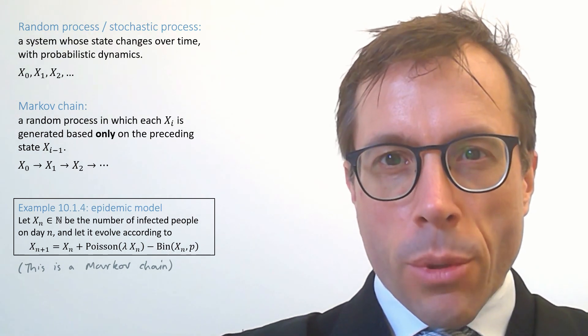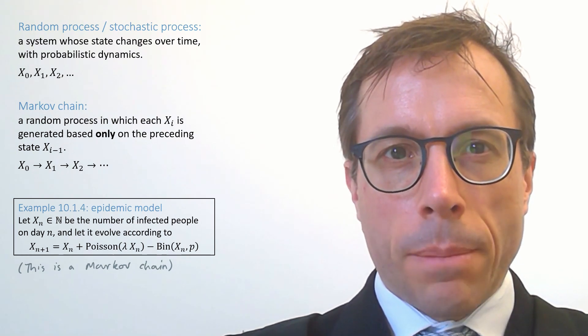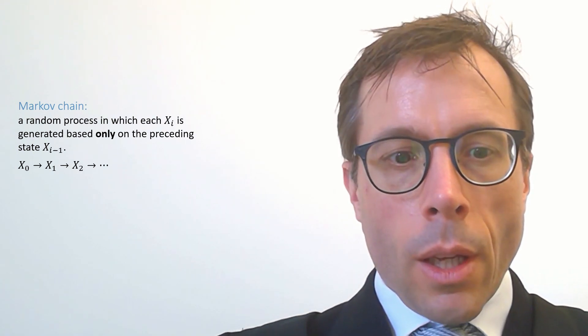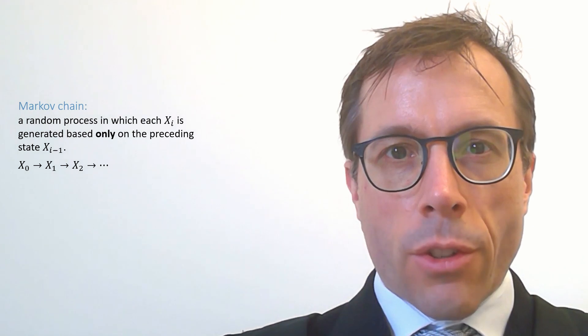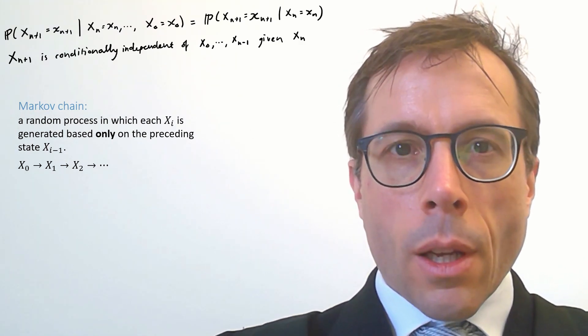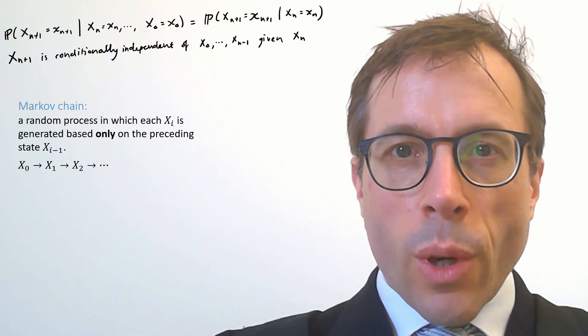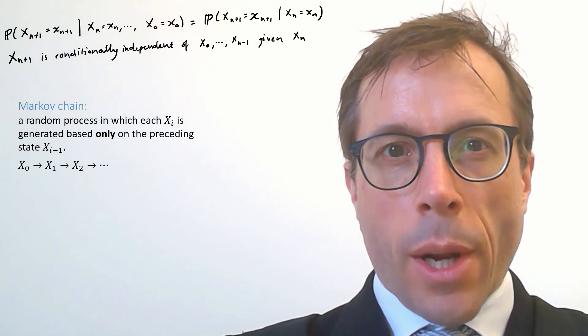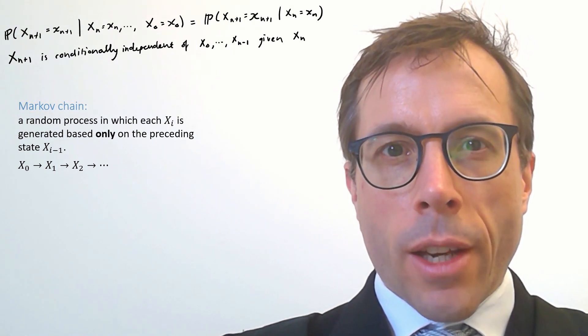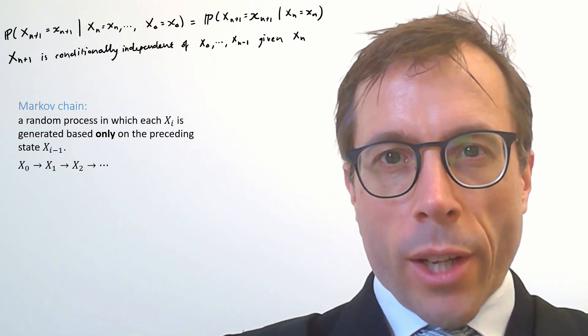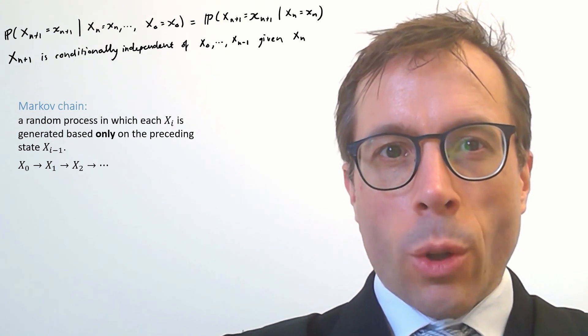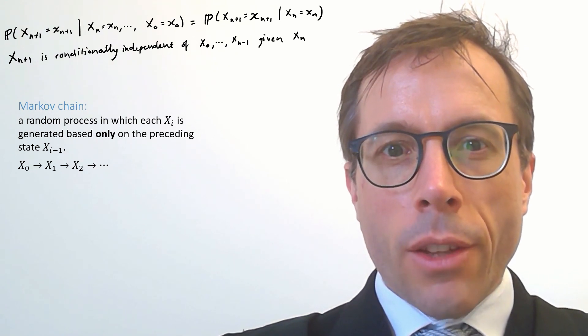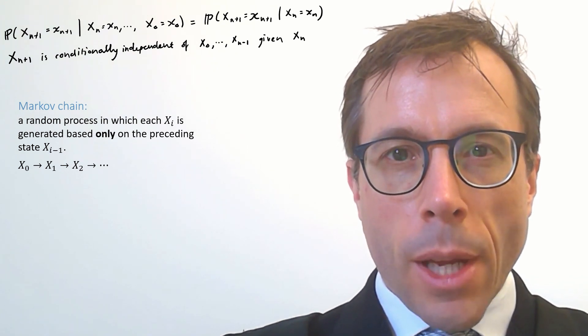This is such an important property that it's worth writing it out properly. Here's how we'd write it out in maths notation. This equation says if we want to predict x n plus 1, and we know all the history from x0 up to xn, then we can throw away x0 up to x n minus 1 because they're all irrelevant. All that matters is xn. This is known as conditional independence.